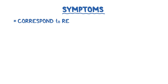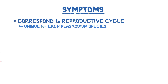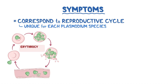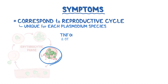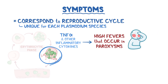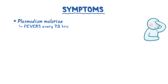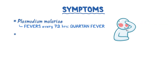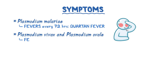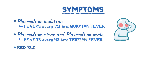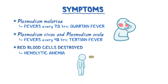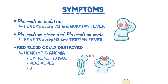Symptoms of malaria correspond to the reproductive cycle that's unique for each plasmodium species. When the red blood cells burst at the end of the erythrocytic phase, tumor necrosis factor alpha and other inflammatory cytokines are released, which causes high fevers that typically occur in paroxysms, or short bursts. For example, in plasmodium malariae, fevers happen every 72 hours, and is called quartan fever. While for plasmodium vivax and plasmodium ovale, fevers happen every 48 hours, and these are called tertian fevers. Since red blood cells are destroyed when merozoites are released, malaria also causes hemolytic anemia, with symptoms like extreme fatigue, headaches, jaundice, and splenomegaly.